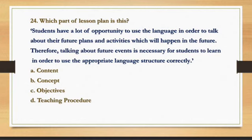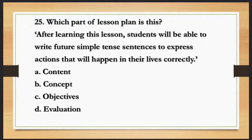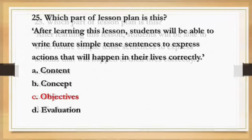Number 25. Which part of a lesson plan is this? 'After learning this lesson, students will be able to write future simple tense sentences to express actions that will happen in their lives correctly.' The correct answer is objectives — this is how lesson objectives are written, describing what students will be able to do after the lesson.